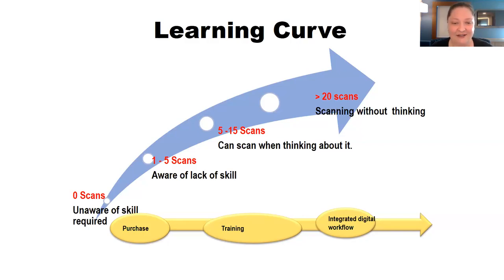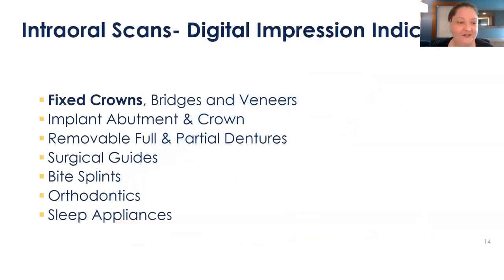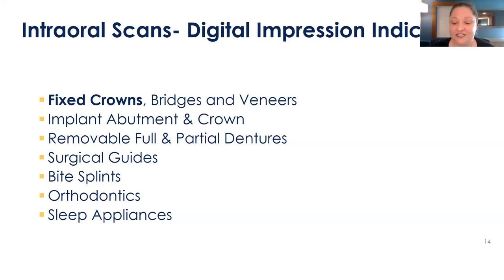It started really clicking for me around the 5 to 15 scan range. Everyone's going to have a different learning curve. We can now scan for practically anything you can do a physical impression for. Today we're going to focus on fixed crowns, but you can also scan for bridges, veneers, implant abutments and crowns, full and partial dentures, surgical guides, bite splints, sleep appliances, and orthodontics.